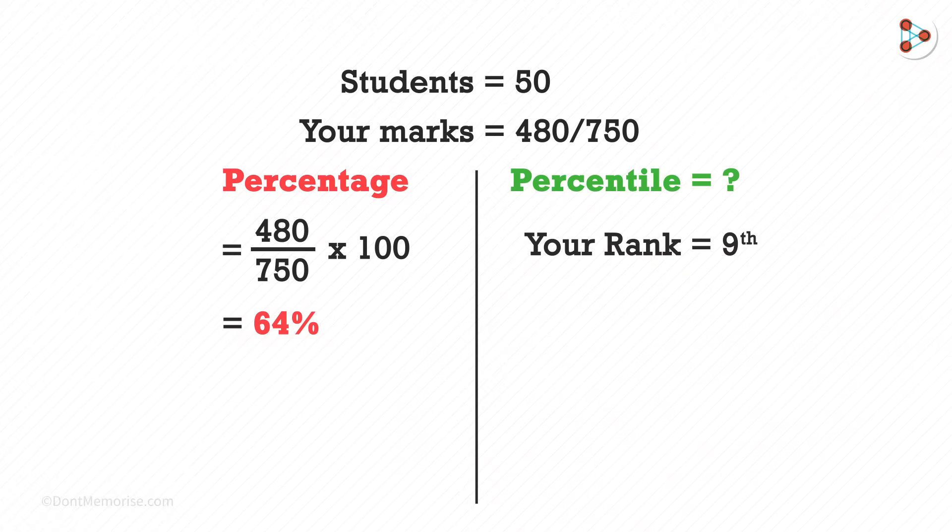Suppose your rank in the class is ninth. We have a very simple formula to calculate the percentile. The numerator will have the number of students who scored lesser marks than you did and the denominator will have the total number of students. Multiply this by 100.